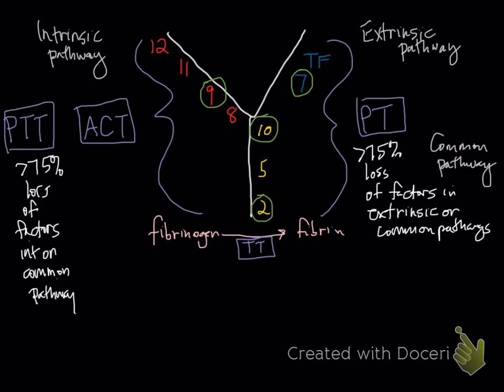Greater than 75% loss of factors in the extrinsic or common pathways. So it could be any one of these are absent or diminished, and you can have a prolongation in your PT.